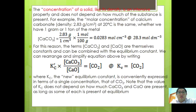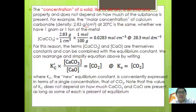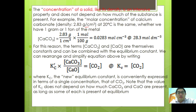The concentration of a solid, like its density, is an intensive property and does not depend on how much of the substance is present. For example, the molar concentration of calcium carbonate is 2.83 g/cm³ at 20°C — the same whether we have 1 gram or 1 ton. Calculating: 2.8 g/cm³ divided by 100 g/mol gives 0.0283 mol/cm³, or 28.3 mol/dm³.